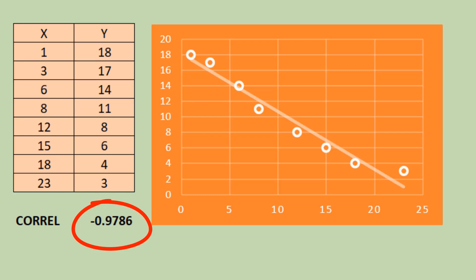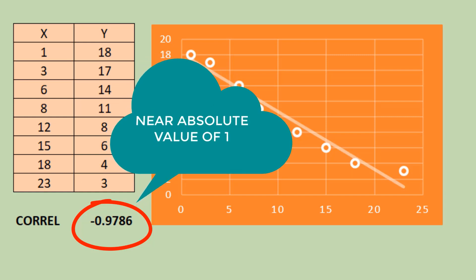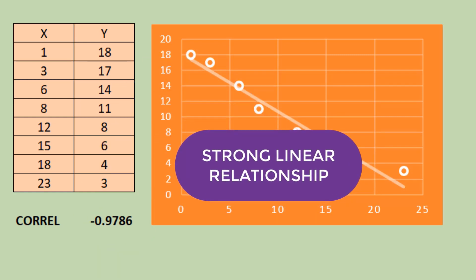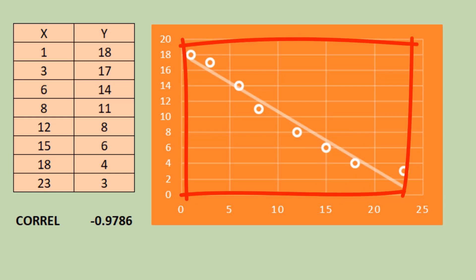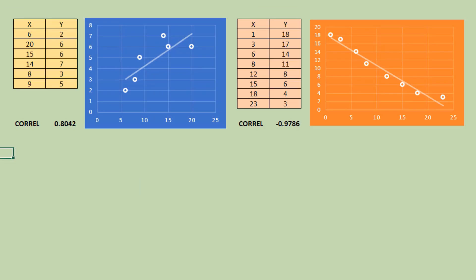Since it is near the absolute value of 1, the two variables also have a strong linear correlation. The scatterplot also shows points near the trend line. Looking at these two tables, we have the same judgment in terms of strength of relationship — they are both strong.